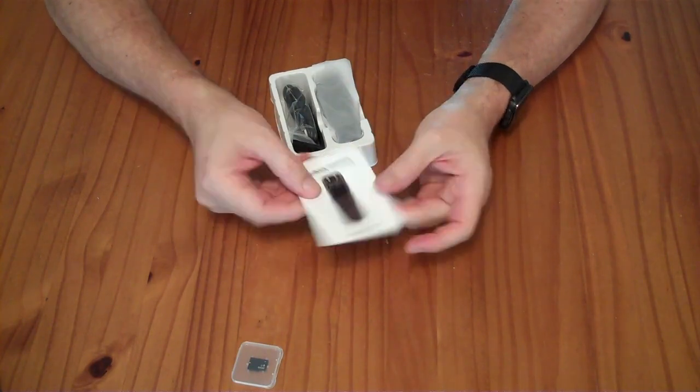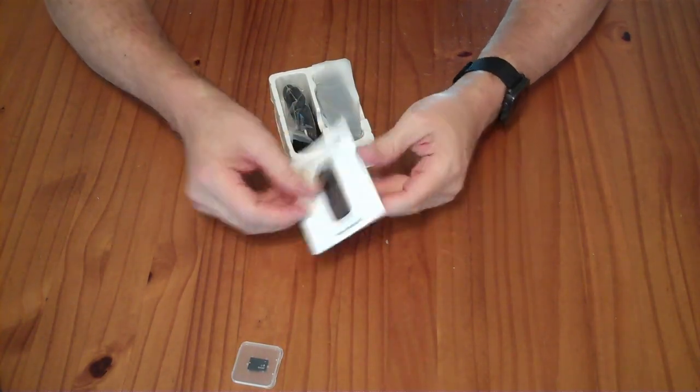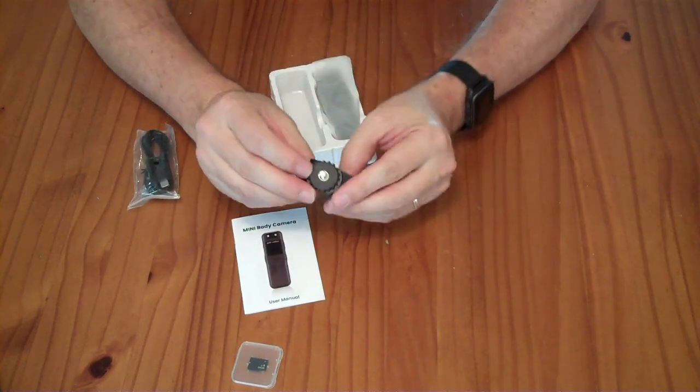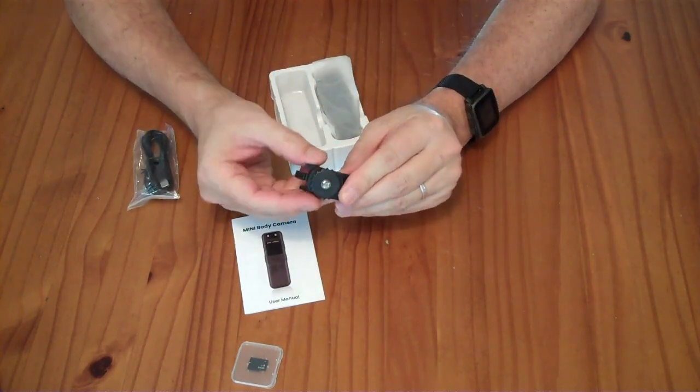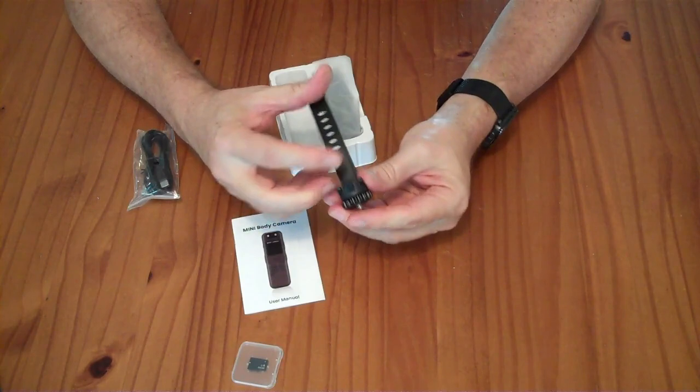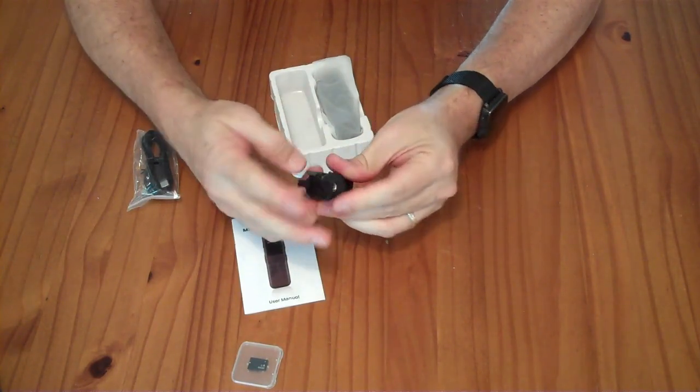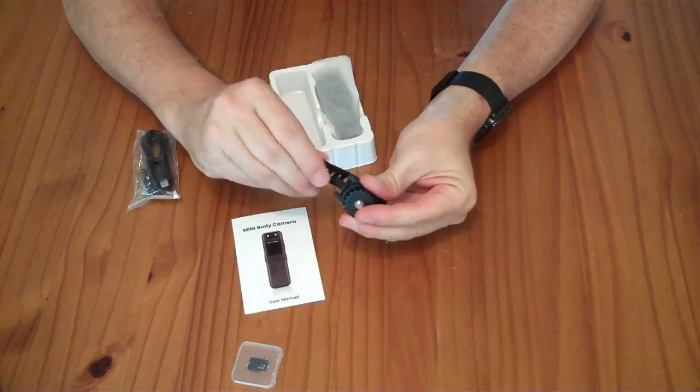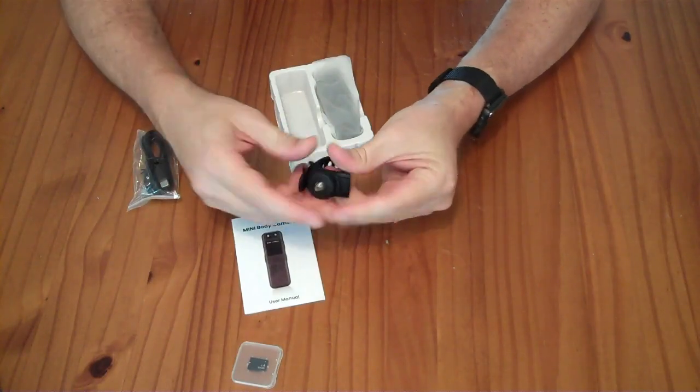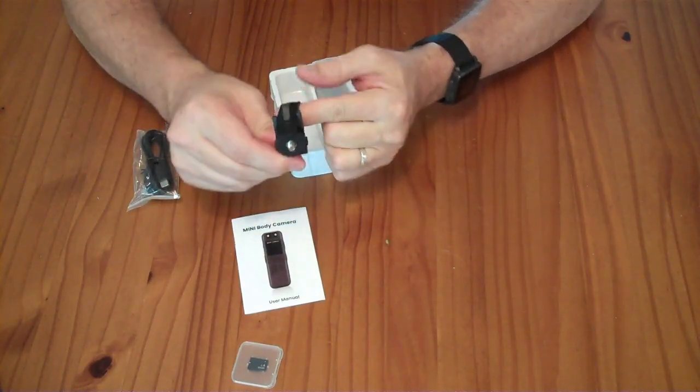A mini body camera user's manual. A quarter by 20 tripod screw with a snap attachment, probably for like a handlebar for example. Anything round that you could snap this around.